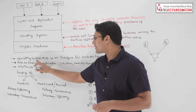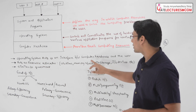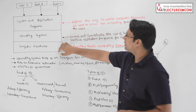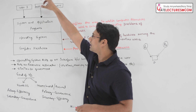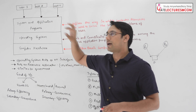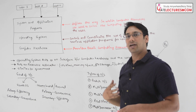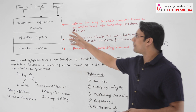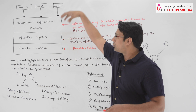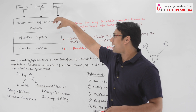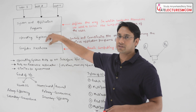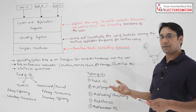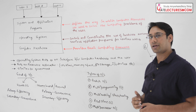The operating system acts as an interface between computer hardware and the user. The application programs — for example MS Word, PowerPoint, MS SQL — are used by multiple users on the computer. The user works on the application program, and this application program communicates with the operating system with the help of some interface — they are going to use APIs, application programming interfaces.